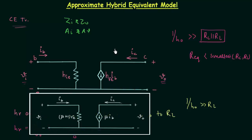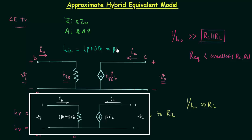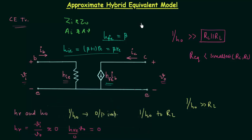Now we will compare this model with the re equivalent model, which you can see on your screen. On comparison, you will find hie is equal to (β + 1)re, where re is the dynamic emitter resistance. Since β + 1 is nearly equal to β, hie equals βre. In the re model, on the output side we have a current dependent current source, and in the approximate hybrid equivalent model we also have a current dependent current source. On comparison, hfe is equal to β. This completes the comparison of the approximate hybrid equivalent model with the re model of the transistor.